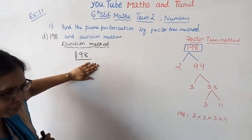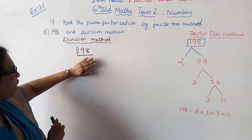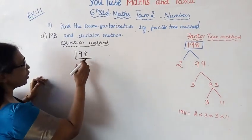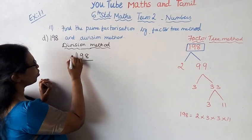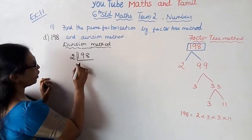First I will do division method. Division method - the ending number is an even number, 8, so I'll put 2. Okay? 2, 2...